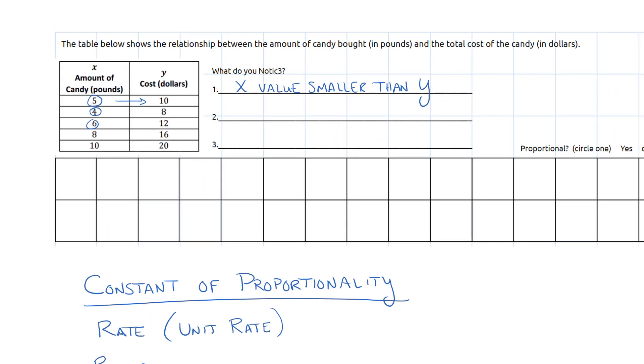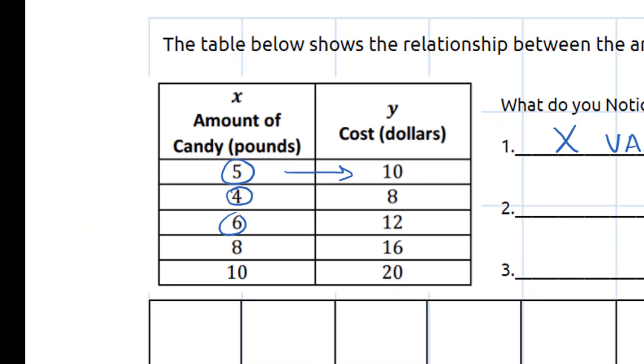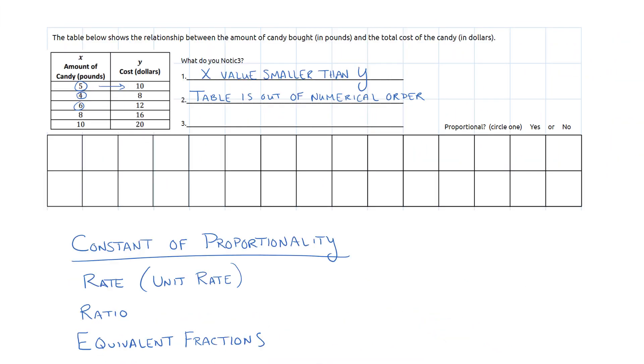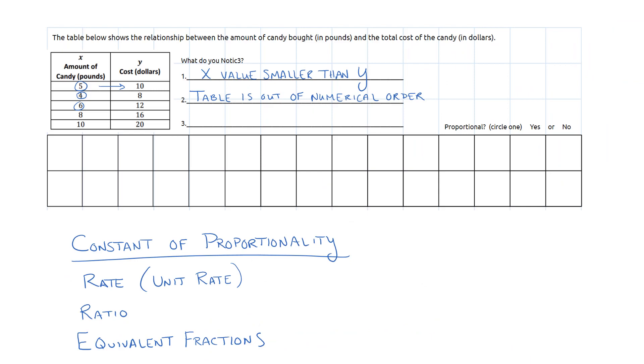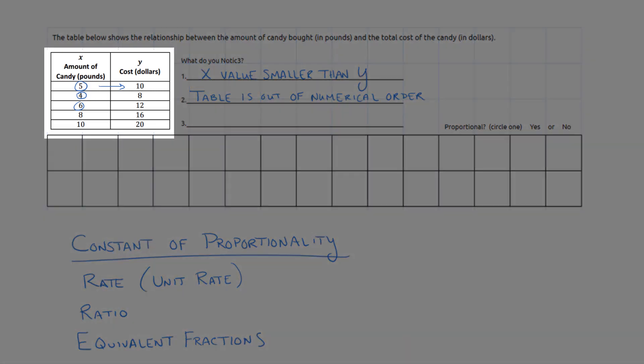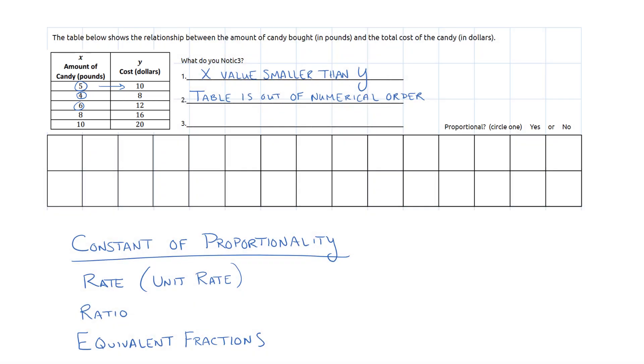Another thing that I notice is that the values in this table, they're not in numerical order. So that kind of messes us up. And that's something that we want to do. We want to rearrange this and order it so that we have numerical order for our x values and our y values. The last thing that I kind of notice is I want to be able to count my x and y value by ones if I can. So which one of these, the x column or the y column, could I possibly count by ones to make it easier?